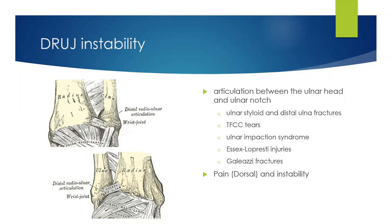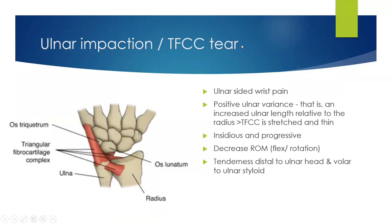The DRUJ injury — distal radioulnar joint instability — is the articulation between the ulnar head and the ulnar notch of the radius, often referred to as the sigmoid notch. You can get various injuries here which can include ulnar styloid and distal ulnar fractures, TFCC injuries, ulnar impaction syndrome, and fractures. With these, the pain is usually more dorsal and there's instability in the wrist.